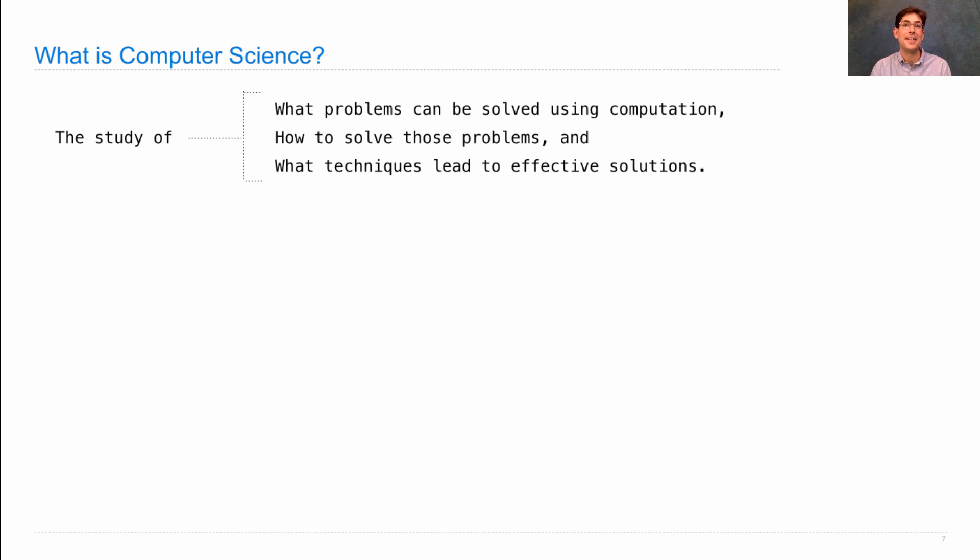Now, it turns out that there are lots of different problems that can be addressed with computation. And so we'll look at some of that list. Most people who call themselves computer scientists specialize in a particular area, which is a group of different problems. So some people study systems, which is the study of large systems like the operating system on your computer or the whole Facebook social network.